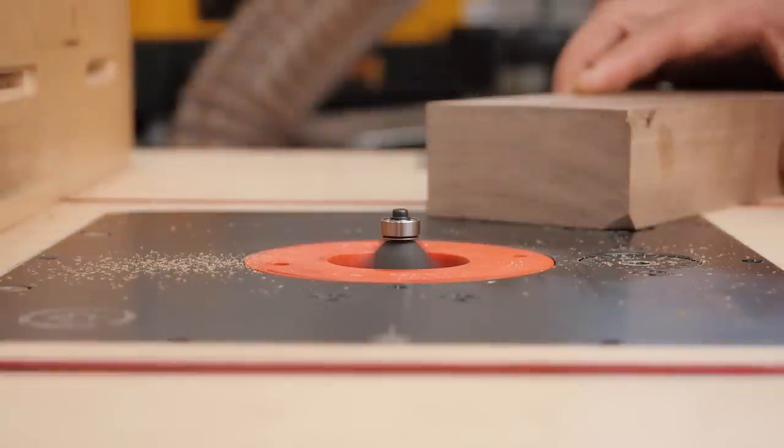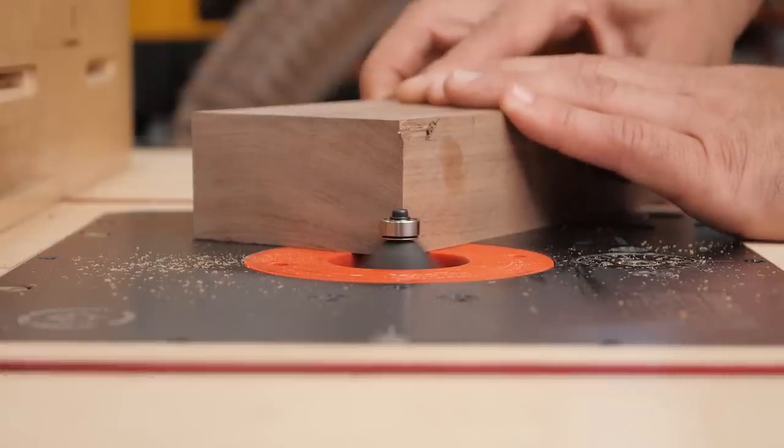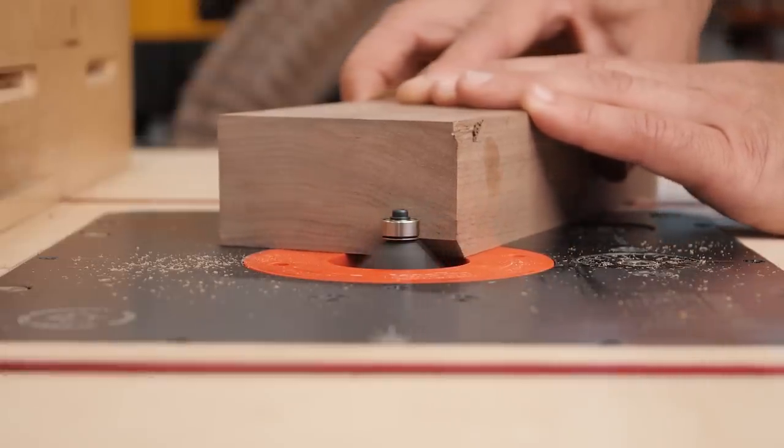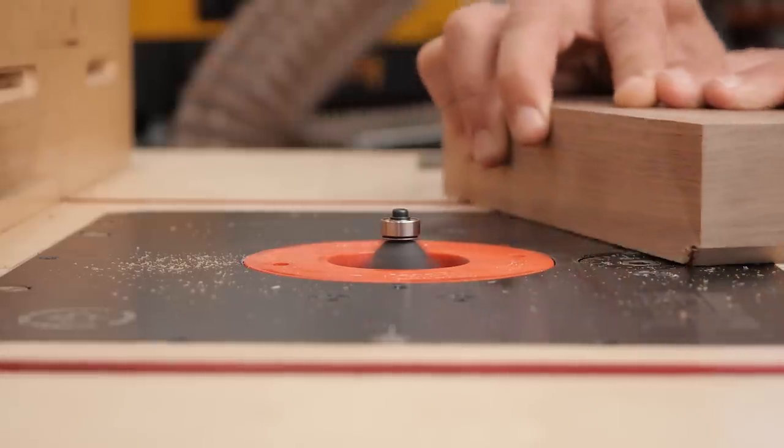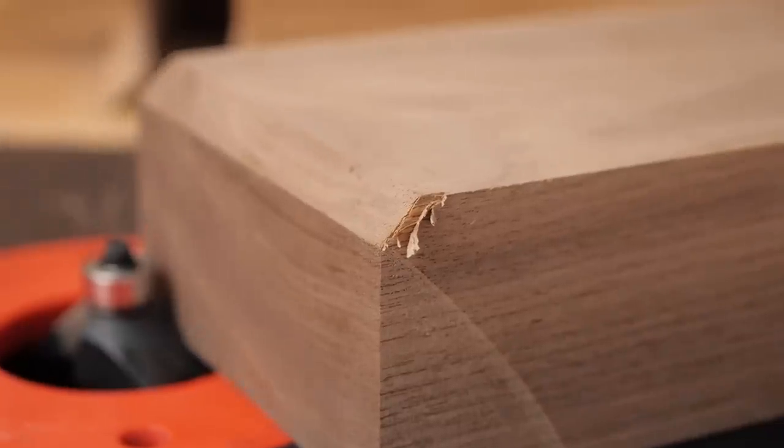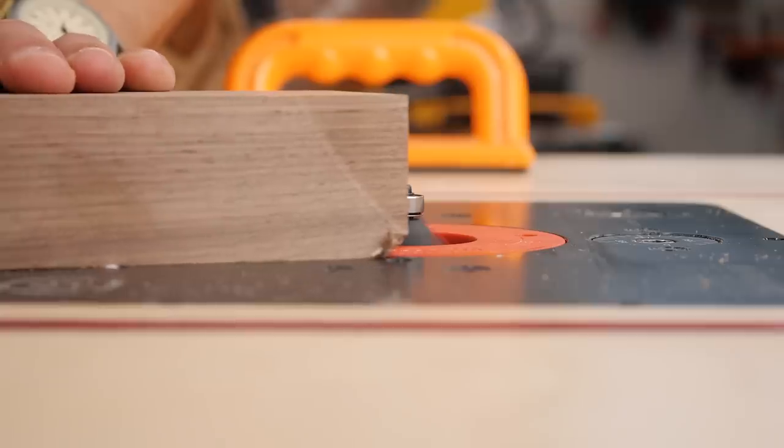So now that you've seen this in slow speed, let's look at it at high speed, or regular speed. It's actually at 60p so it's slowed down about 2.3 times. And you can see here when I do the end grain we get a pretty significant tear out, but that doesn't go below the depth the bit is going to cut on the long grain.